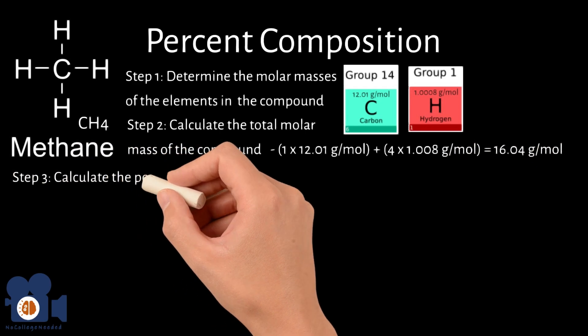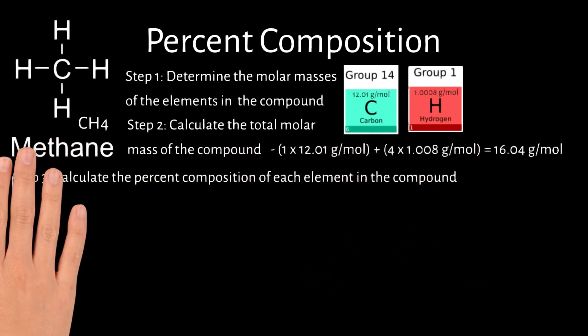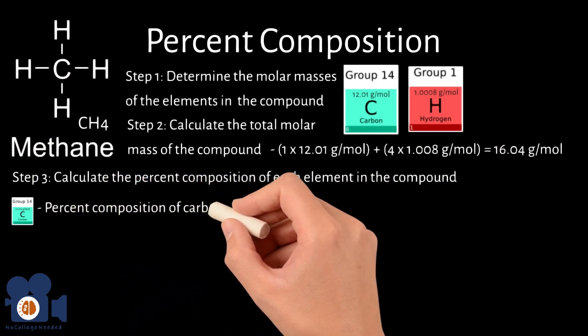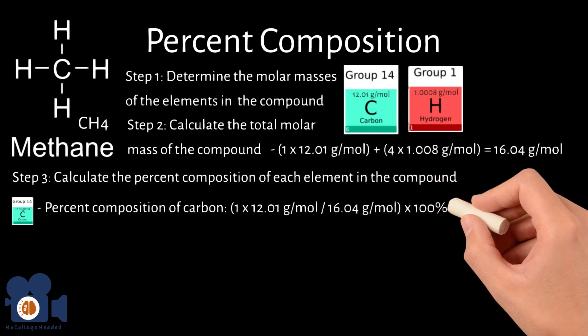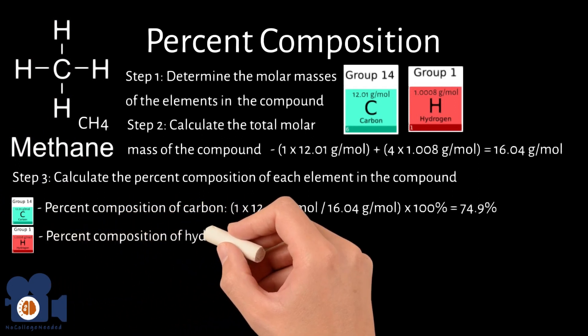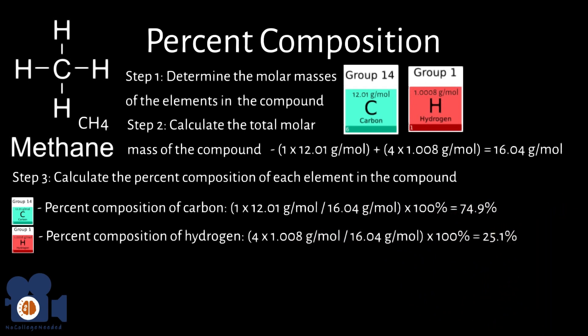Step 3: Calculate the percent composition of each element in the compound. Percent composition of carbon is 1 times 12.01 grams per mole divided by 16.04 grams per mole times 100 percent equals 74.9 percent. Percent composition of hydrogen is 4 times 1.008 grams per mole divided by 16.04 grams per mole times 100 percent equals 25.1 percent.